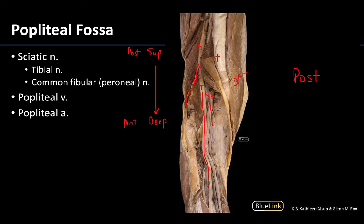Right at the distal border of the popliteal fossa, the popliteal artery divides into its terminal branches — the anterior and posterior tibial arteries — which supply the anterior and posterior compartments of the leg. In this posterior view, you can see the posterior tibial artery running down the leg in this region. The anterior tibial artery goes in front of the interosseous membrane, so it's not quite as visible in this view.